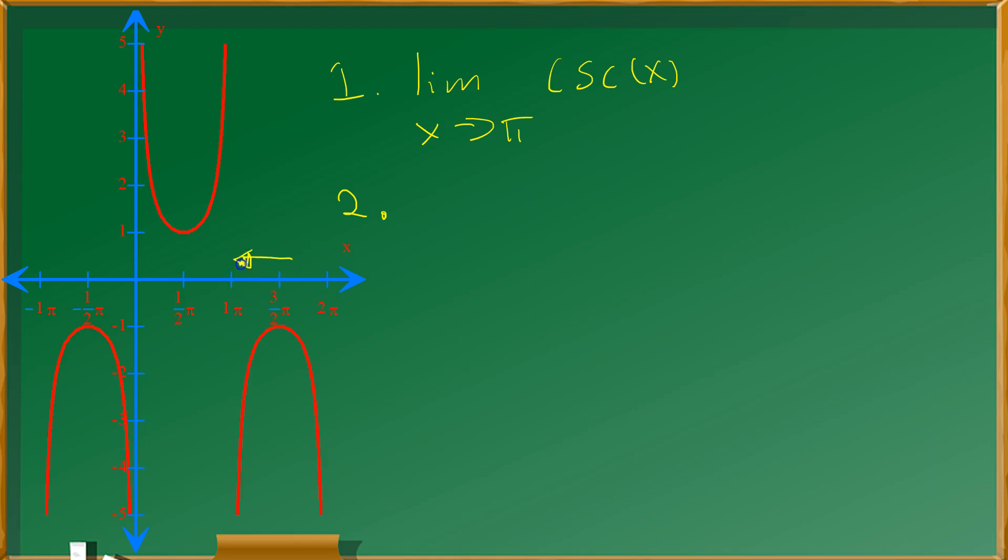Here I'm drawing this arrow. This arrow represents values of x that are approaching pi from the right side. When that occurs, the values of the function go down towards negative infinity over here.